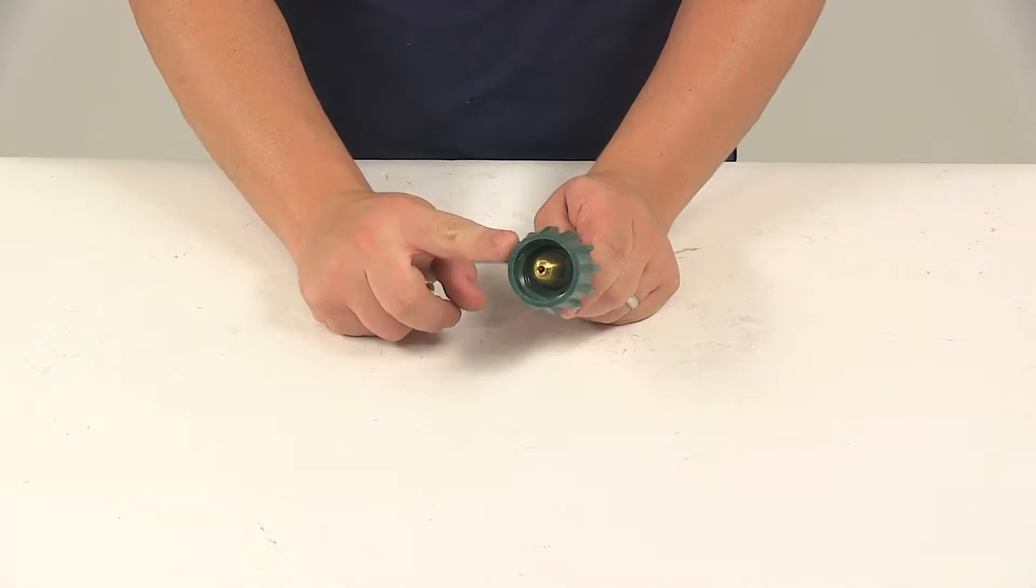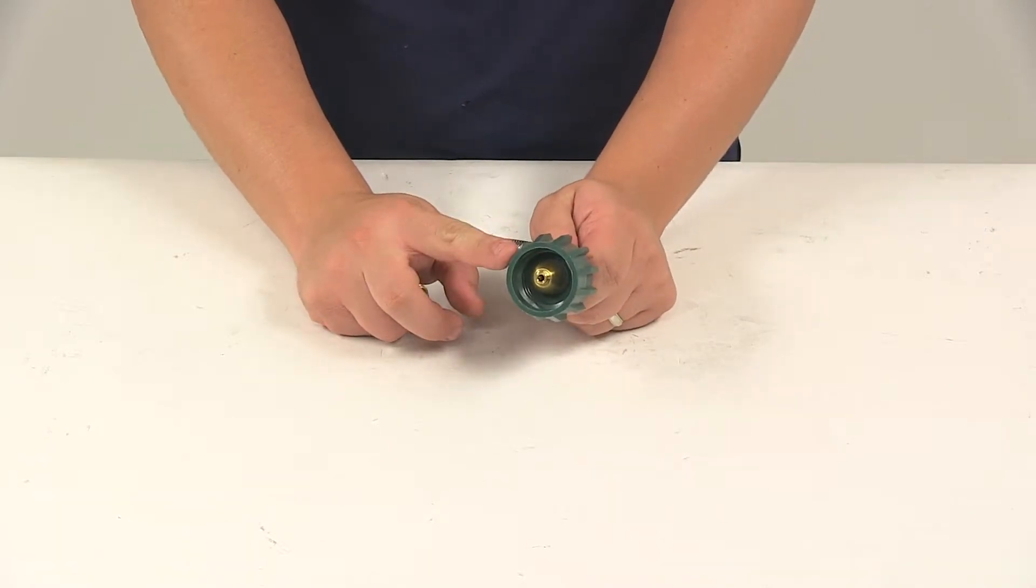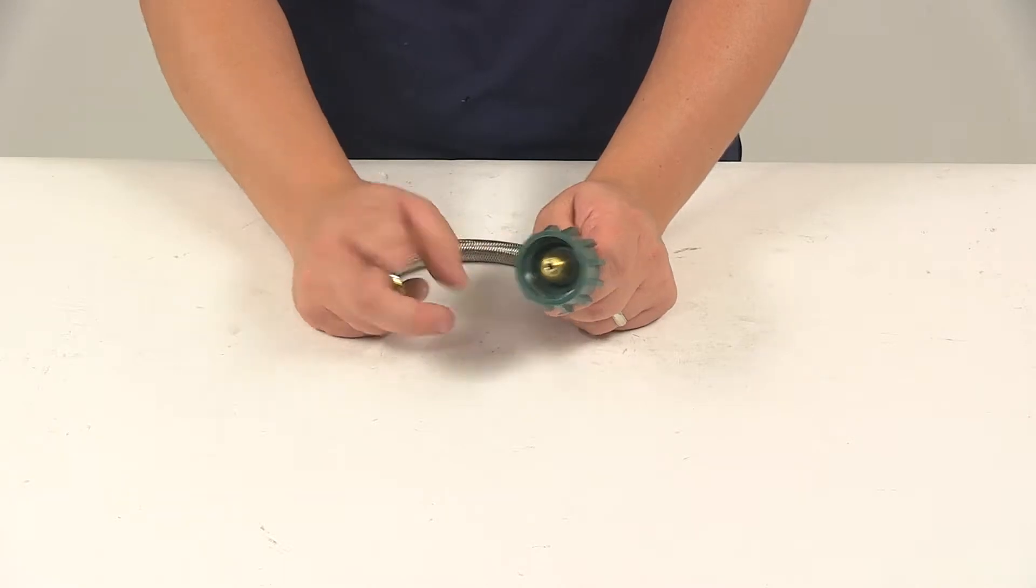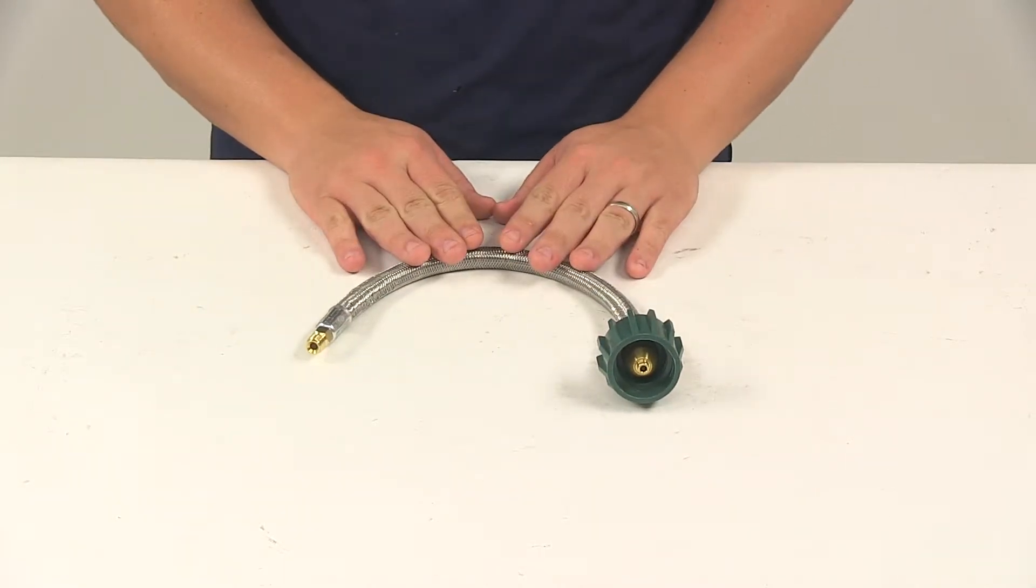The Type 1 dark green connector includes an internal back check to ensure that the system does not allow a backflow gas leak. The hose is going to feature a quarter-inch inner diameter.